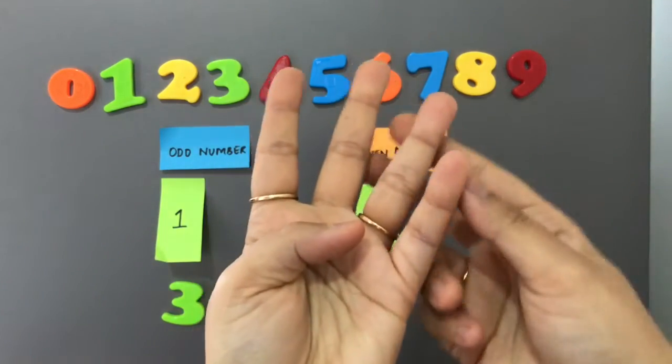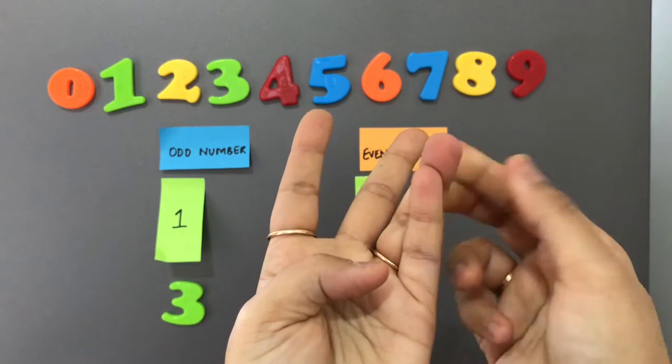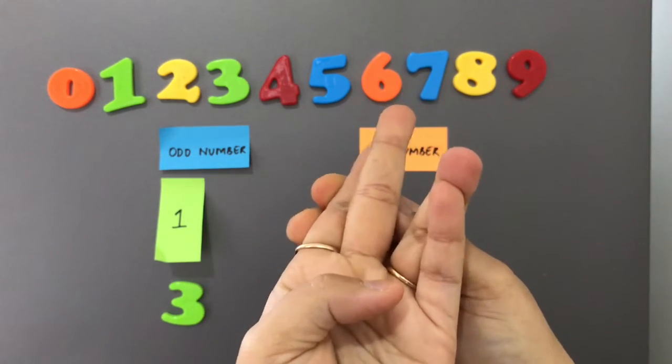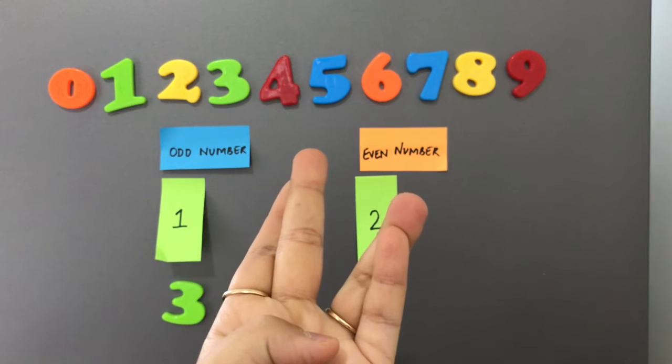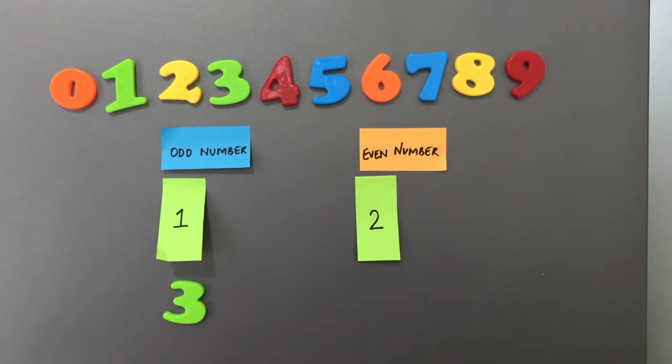Coming to number four. These two fingers form a pair and these two fingers form a pair. Is there any friend left alone? No. So number four is an even number.